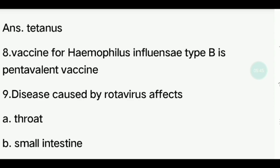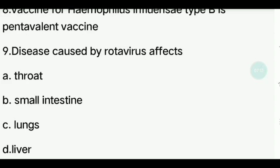Eighth question. Vaccine for Haemophilus Influenzae Type B. Ninth question. Rotavirus affects which part of the body? Options: Throat, Lungs, Liver. Answer is small intestine.